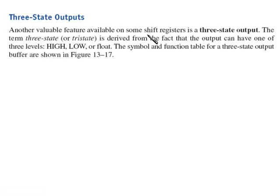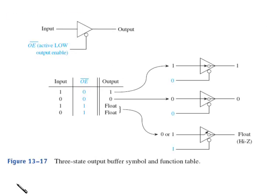So another valuable feature available in some shift registers and as far as that goes, any kind of a register type integrated circuit is called the three state outputs. The term three state or tri-state is derived from the fact that the output can have one of three levels. It could either be high or low, but then it's got the third condition called float. The symbol is going to be shown in figure 13-17.